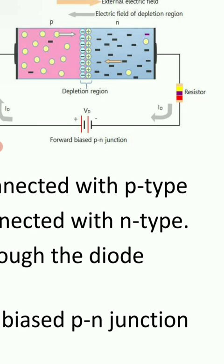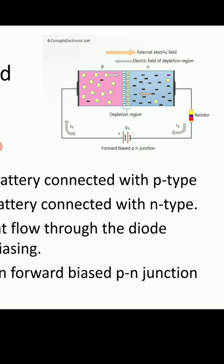After some time, the depletion region will get removed. When the given forward bias voltage reaches more than the barrier potential, the depletion region will get removed. At that time, electrons will start to enter into the P-type semiconductor and holes will start to enter into the N-type semiconductor, due to which current will start to flow.